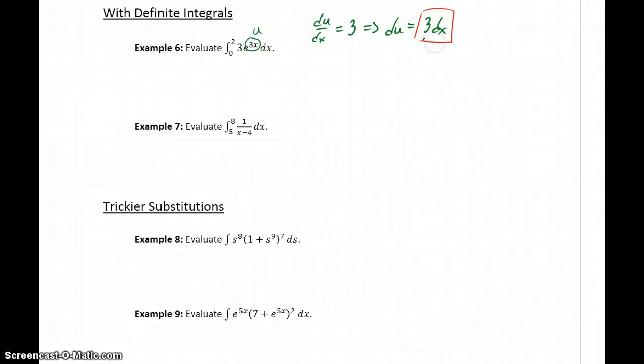So we're still dealing with these simpler substitution problems, so we should be able to find both of those pieces in our original integration problem. We can swap both of those out to rewrite our integral as the integral of e to the u du.